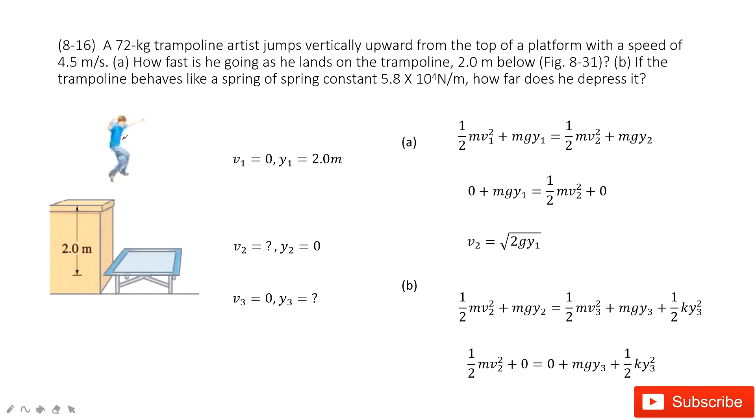As we can see, there is a person. At the initial state, velocity is 0, and y1 is 2 meters. And so we see he jumps, reaches to state 2. At state 2, the velocity we need to know, and y2 is 0, because we consider this as the reference point.